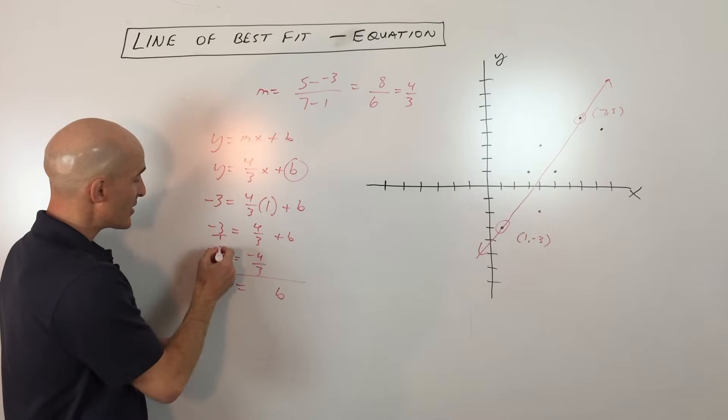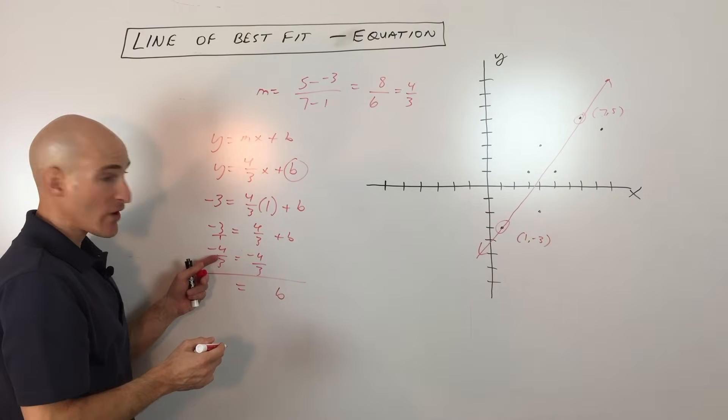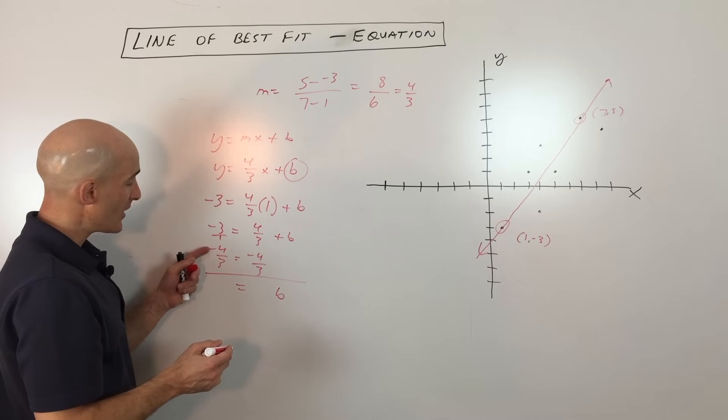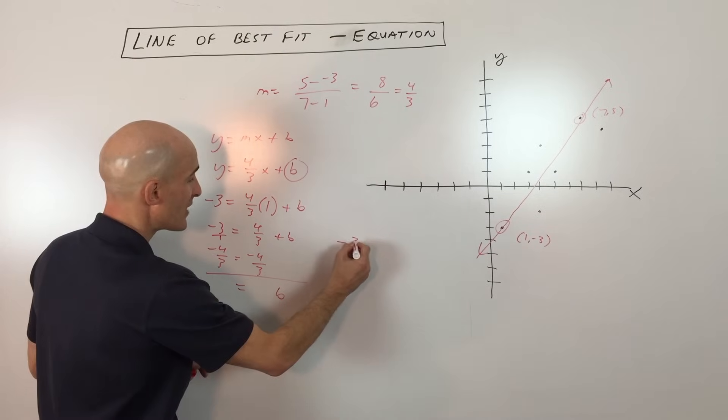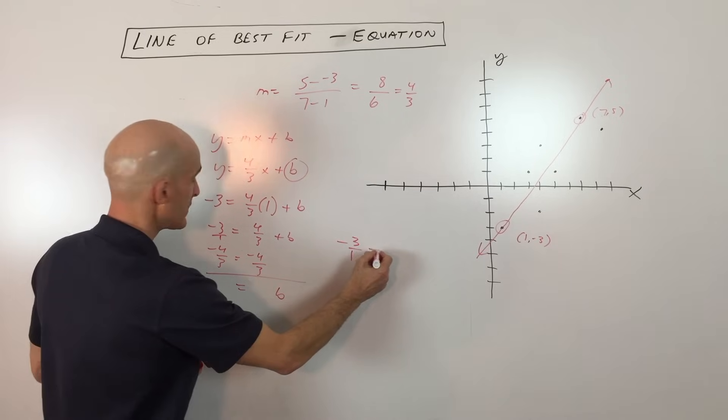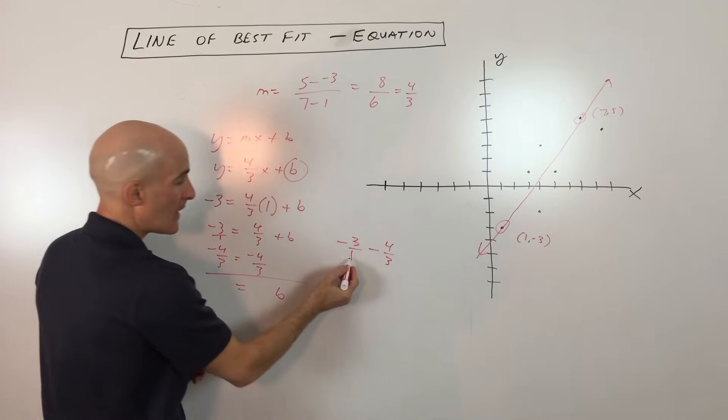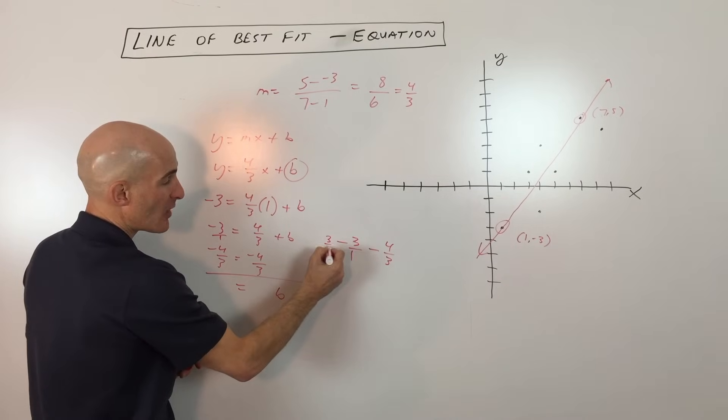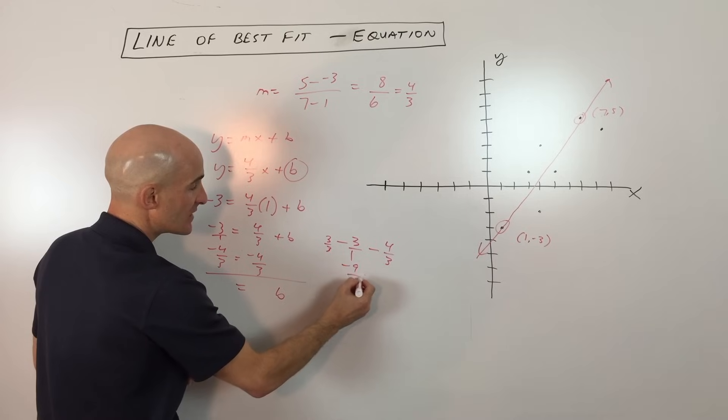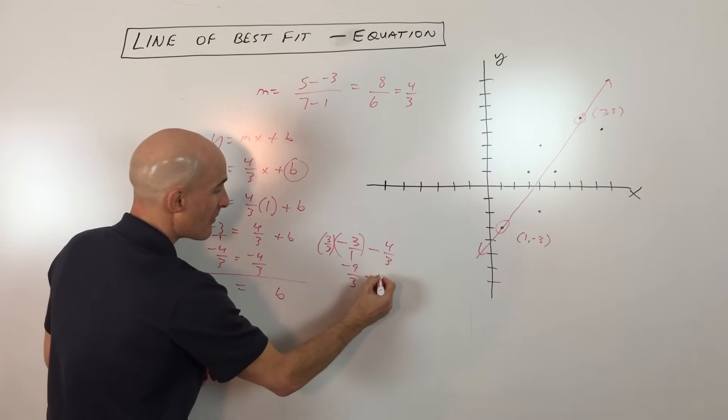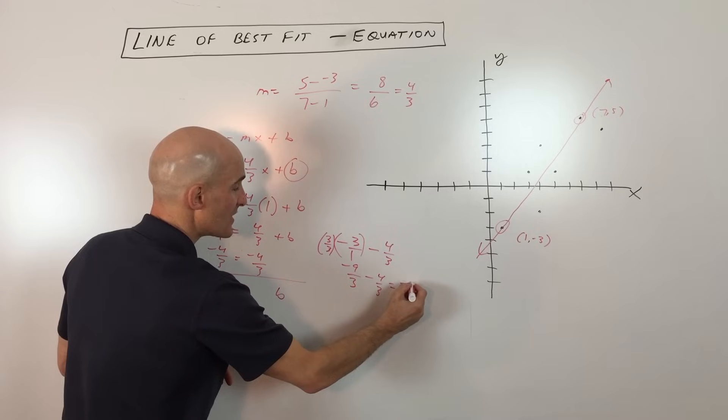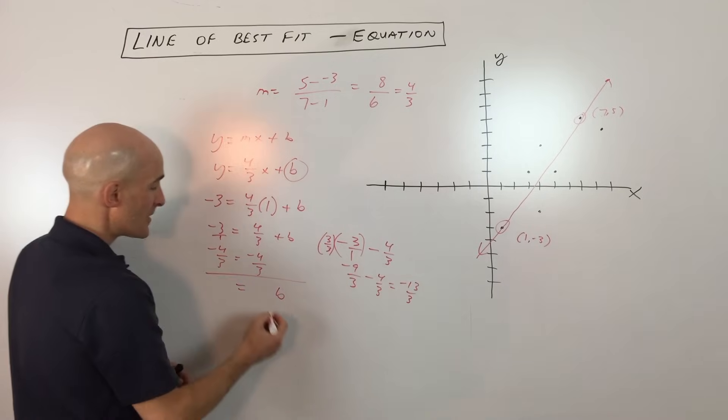Now some students get a little bit confused at this point or a little intimidated maybe I should say. We want to combine these two fractions, so a negative three which is like a negative three over one minus four thirds. Let's go ahead and do that on the side over here: negative three over one minus four over three. We want to get common denominators so we're going to multiply by three over three, so that's negative nine thirds minus four thirds which equals negative 13 thirds.